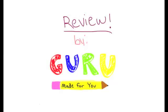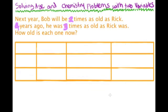This lesson will be similar to the last lesson because we're going to use charts to make our two equations to solve word problems with a system of linear equations. Today we're going to solve age and chemistry problems, so let's get started.